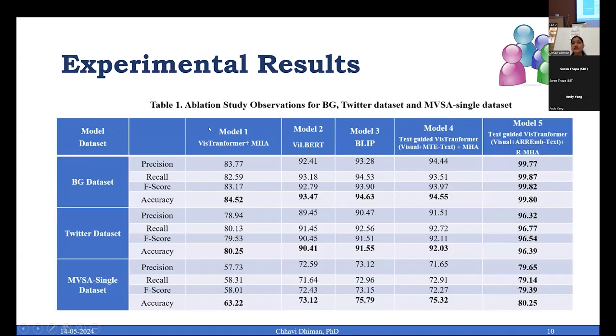These are the results we have observed when we evolved during the process of designing the architecture. When we started with the very fundamental vision transformer having the inbuilt multi-head attention, the accuracy is reported as 84.52, 80.25, and 63.22.